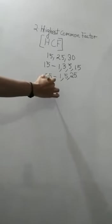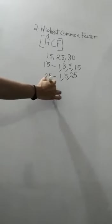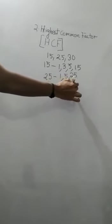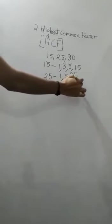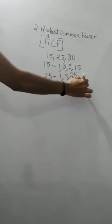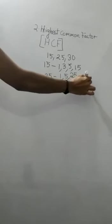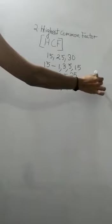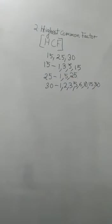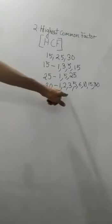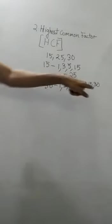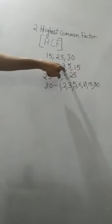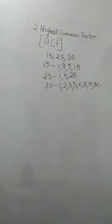Now, the factors of 30 are 1, 2, 3, 5, 6, 10, 15, and 30. So 30 is having more factors. The factors of 30 are 1, 2, 3, 5, 6, 10, 15, 30; factors of 25 are 1, 5, 25; and factors of 15 are 1, 3, 5, 15. These are all the factors.